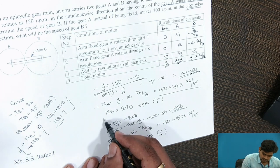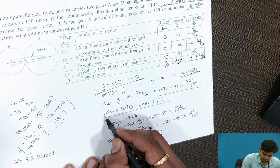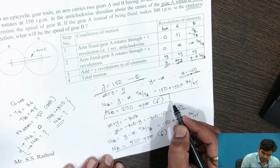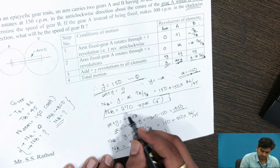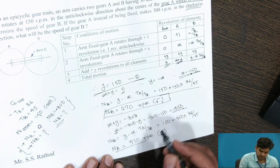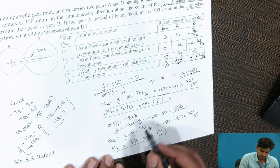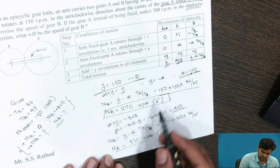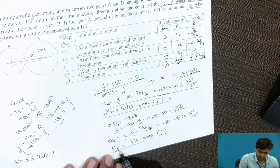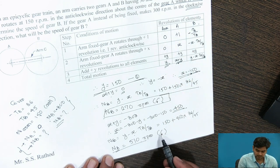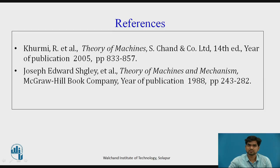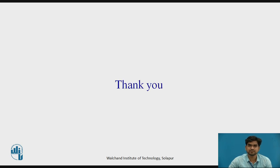So the first answer is 270 RPM in anticlockwise direction, and for the second condition, the speed of B is 510 RPM in anticlockwise direction. These are my references. Thank you.